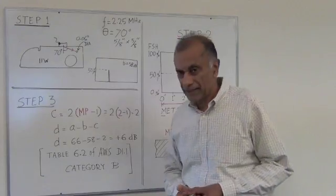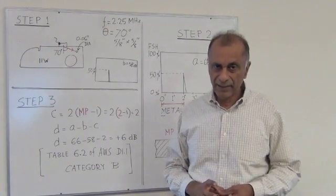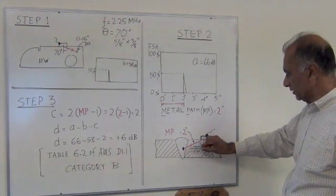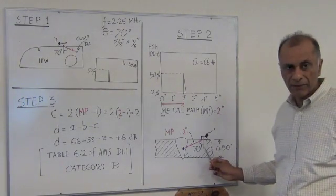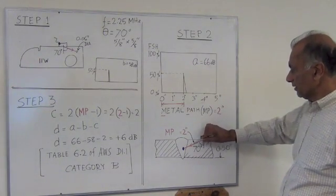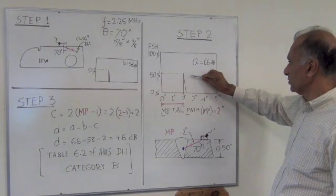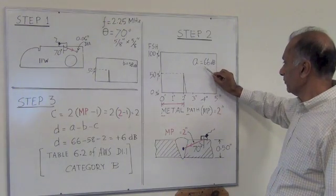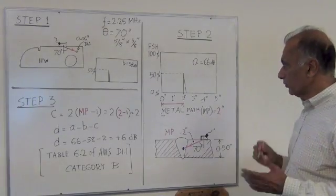Then we start scanning the structure. Let's say we find an indication while we are scanning. Here we are doing the inspection, and this is the indication in purple color, same probe, 70 degree probe. Then again we adjust the signal from this indication to 50%, and in this case this is called gain indication rating A.